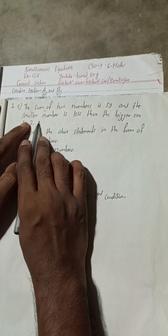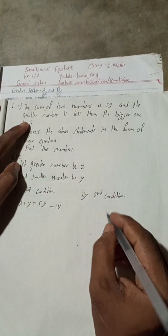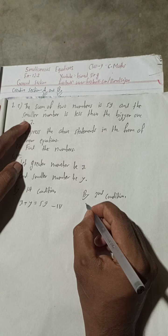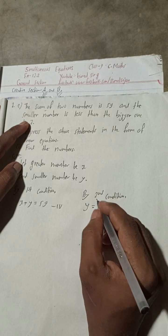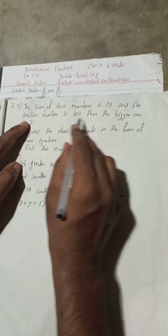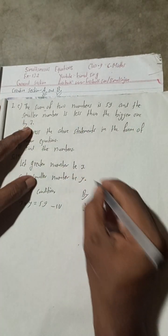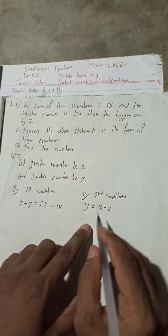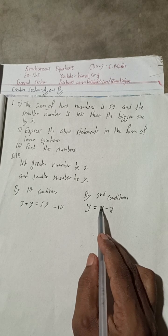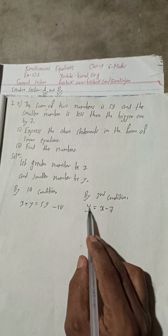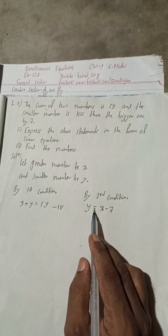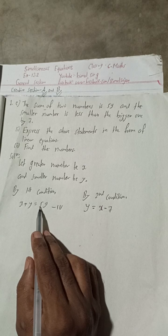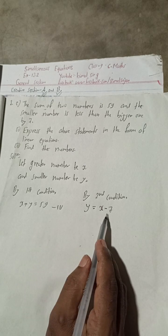By the second condition, the smaller number is less than the bigger one by seven. So the smaller number y is equal to x minus 7. This is our equation 2. So we have: x plus y equals 59, and y equals x minus 7.